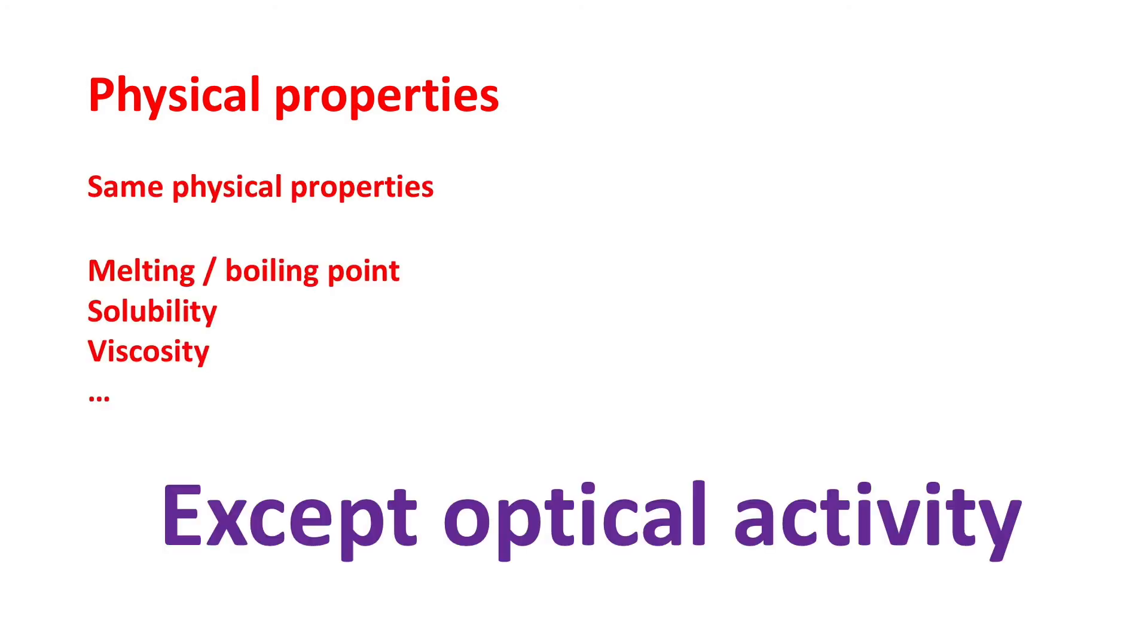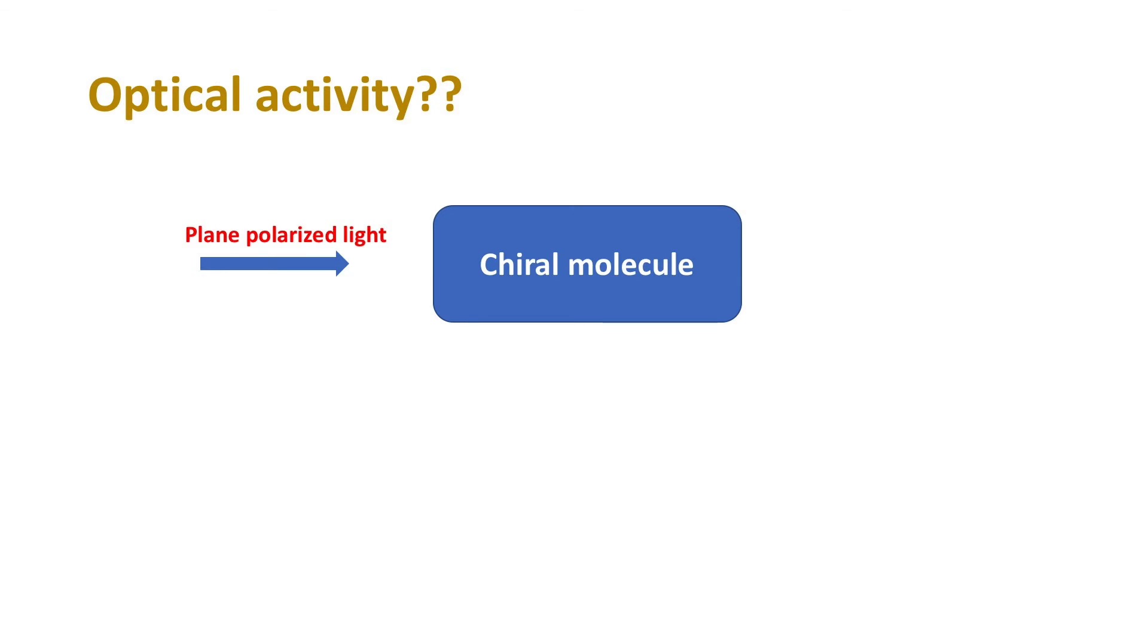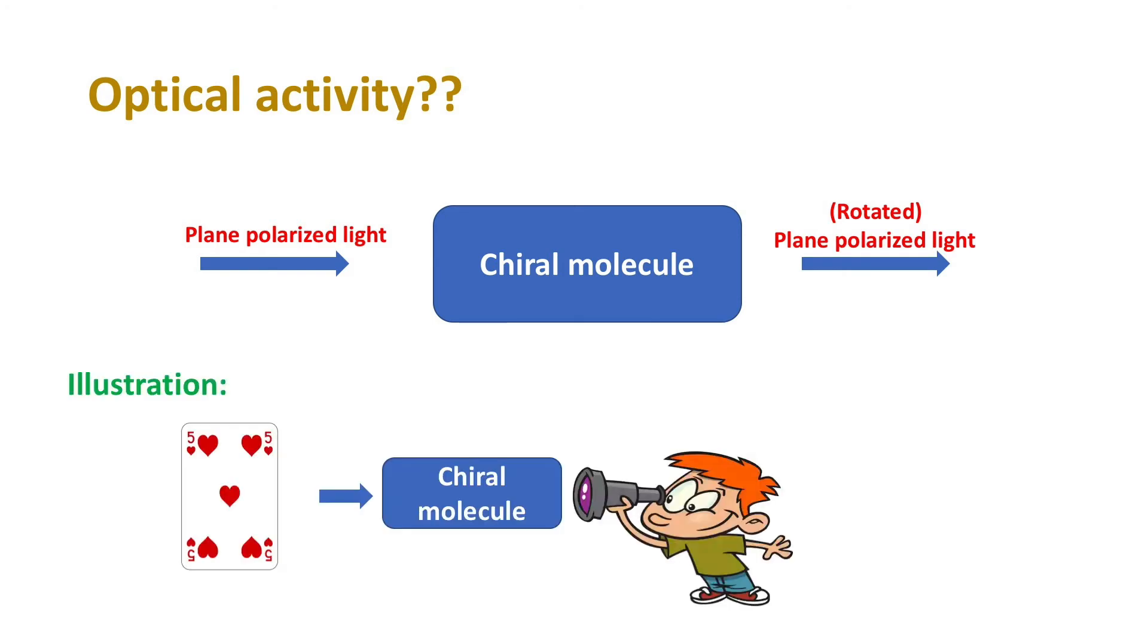What about their physical properties? Enantiomers show same physical properties except optical activity. So what is optical activity? Scientists discovered that chiral molecules can rotate the plane polarized light to a certain degree.